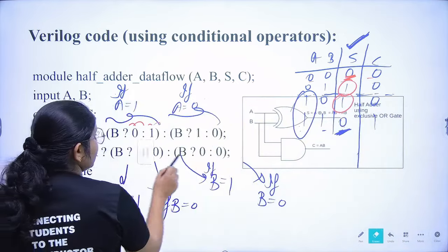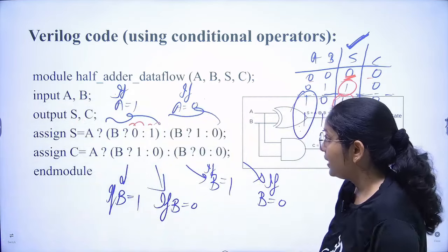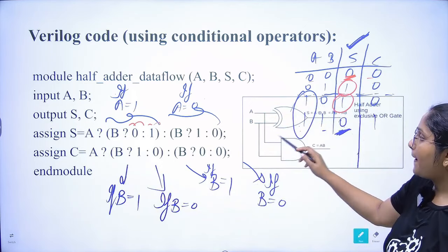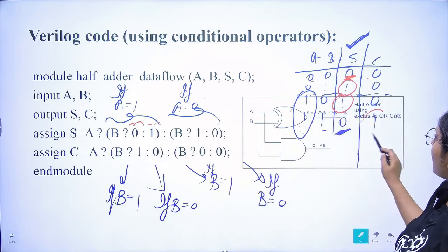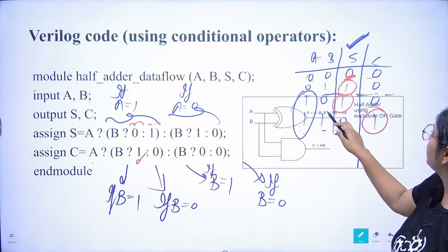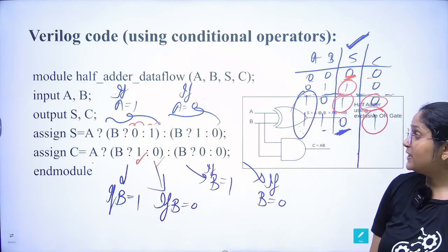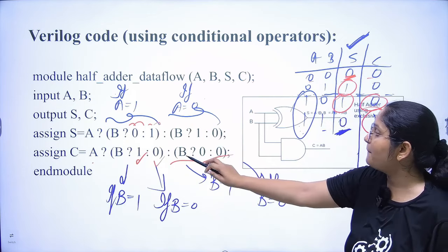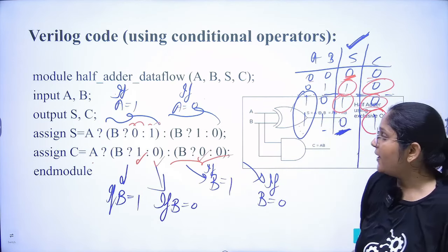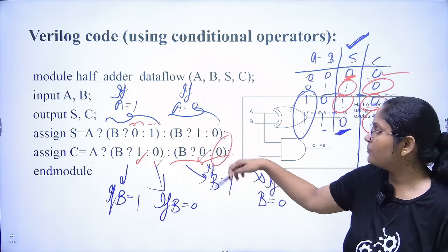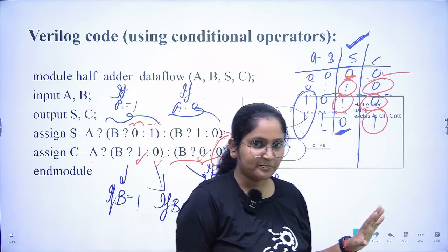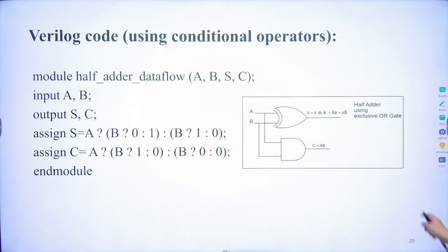For carry, we check similarly: if a is one and b is one, output is one. If a is one and b is zero, output is zero. If a is zero and b is one, output is zero. If a is zero and b is zero, output is zero. So the conditional operator correctly captures the carry truth table.